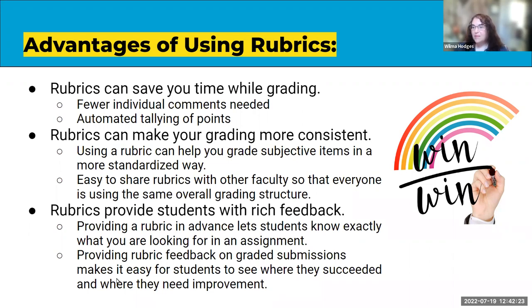Rubrics can also make your grading more consistent. Subjective assignments like essays or writing assignments lend themselves really well to rubrics, because sometimes it's difficult to assign a point value based on an overall paper. When you break it down into subcategories and specific criteria, it's easier to see whether they met each one. It's also easy to make grading consistent across faculty — if a course is taught by several instructors, they can all share a rubric.